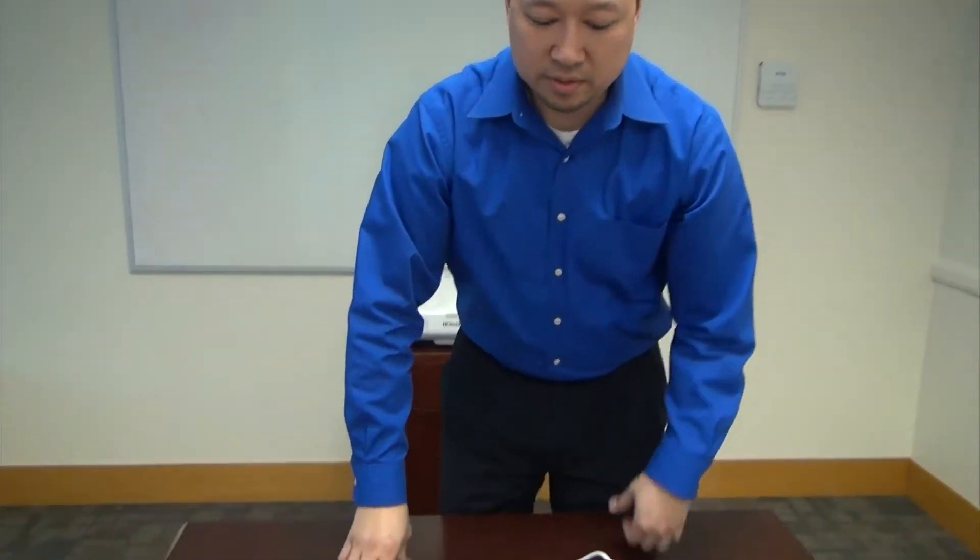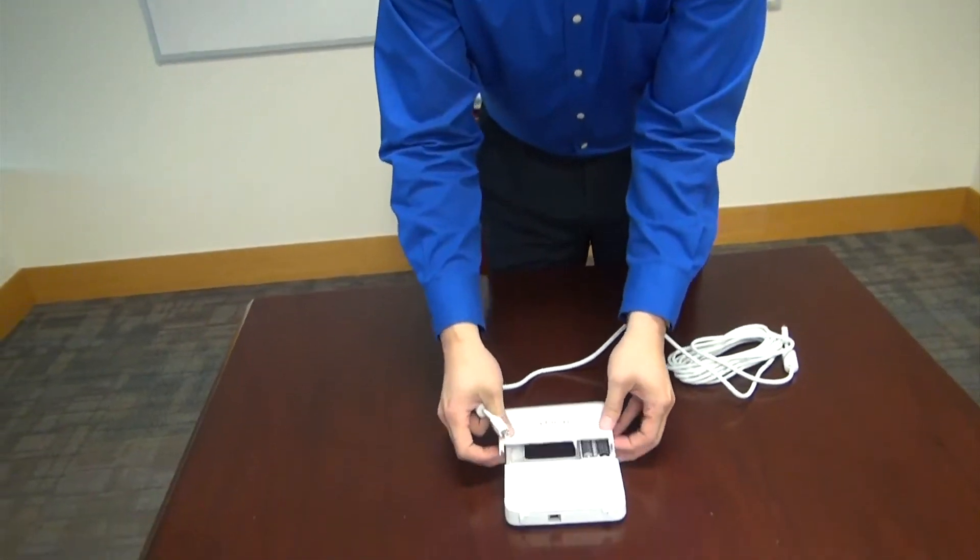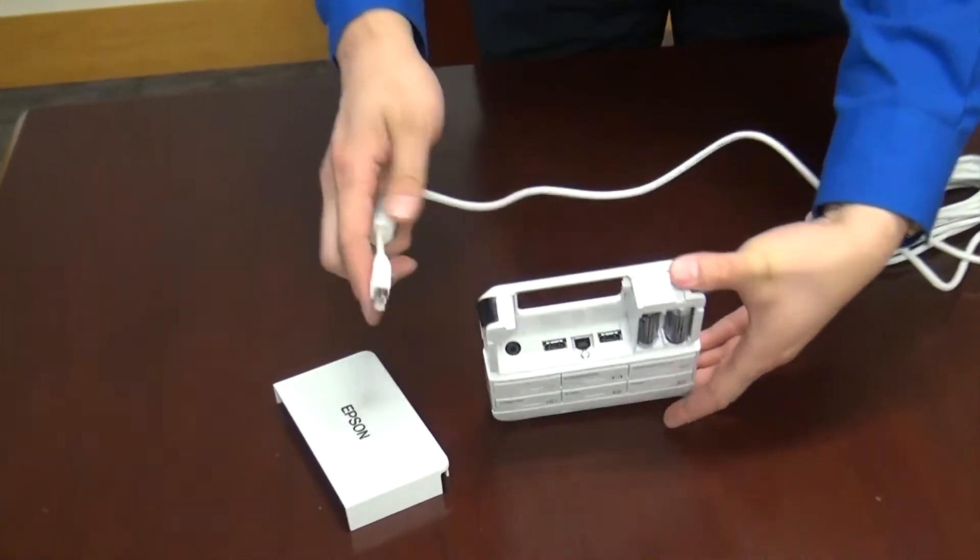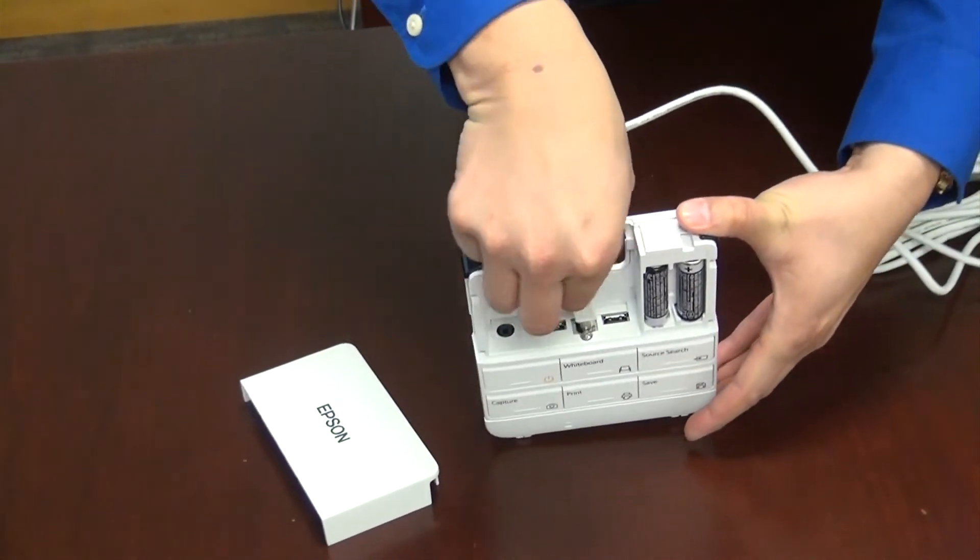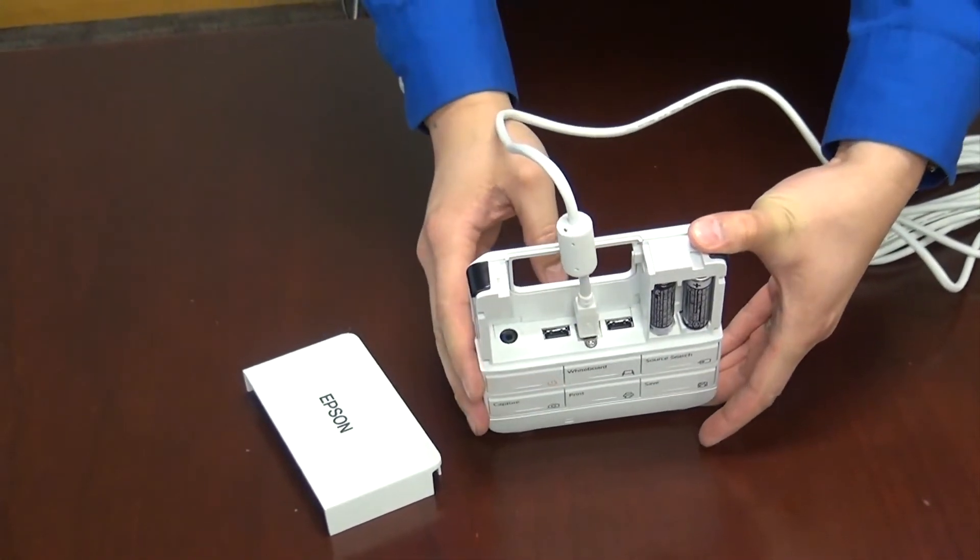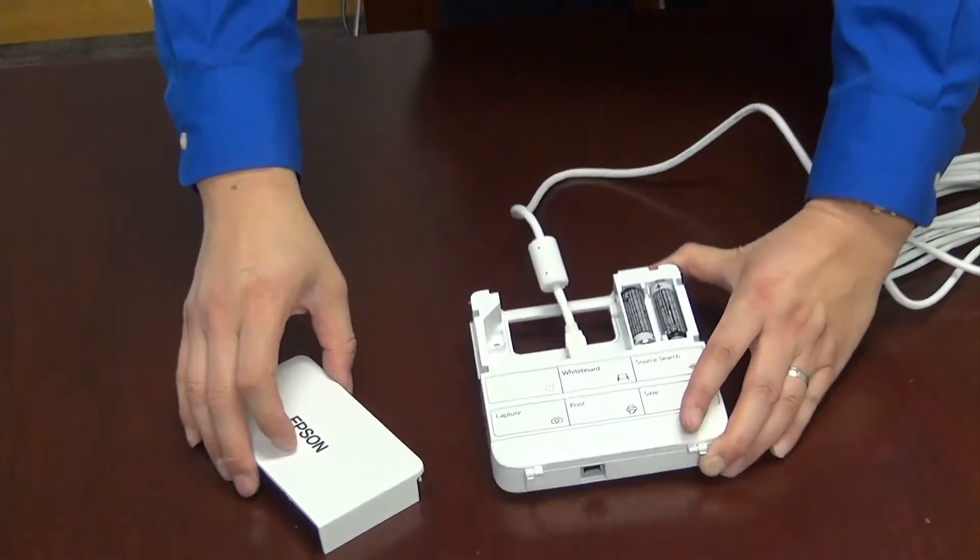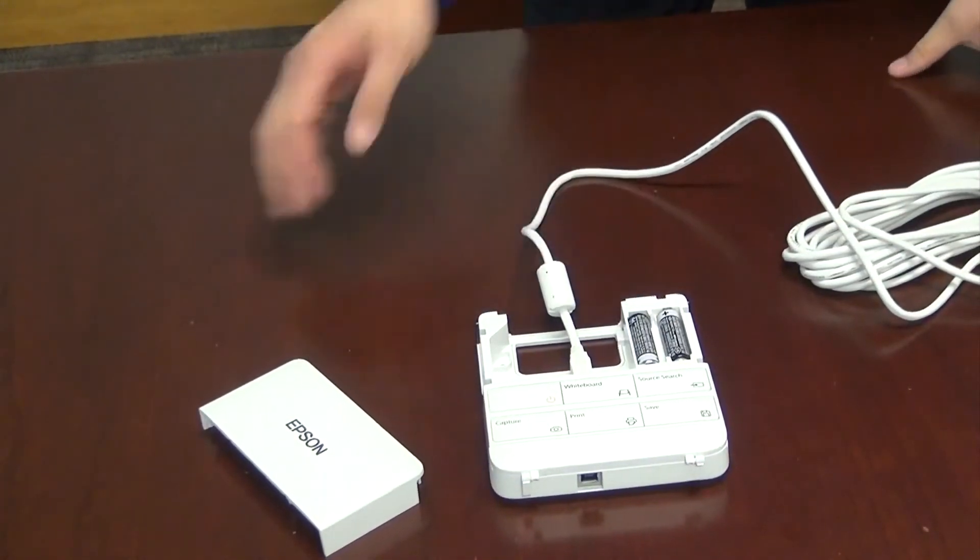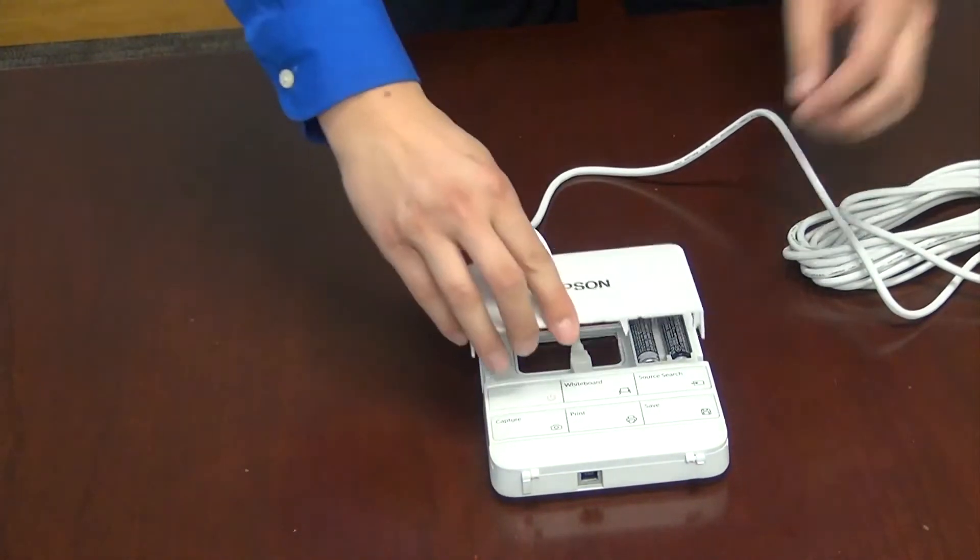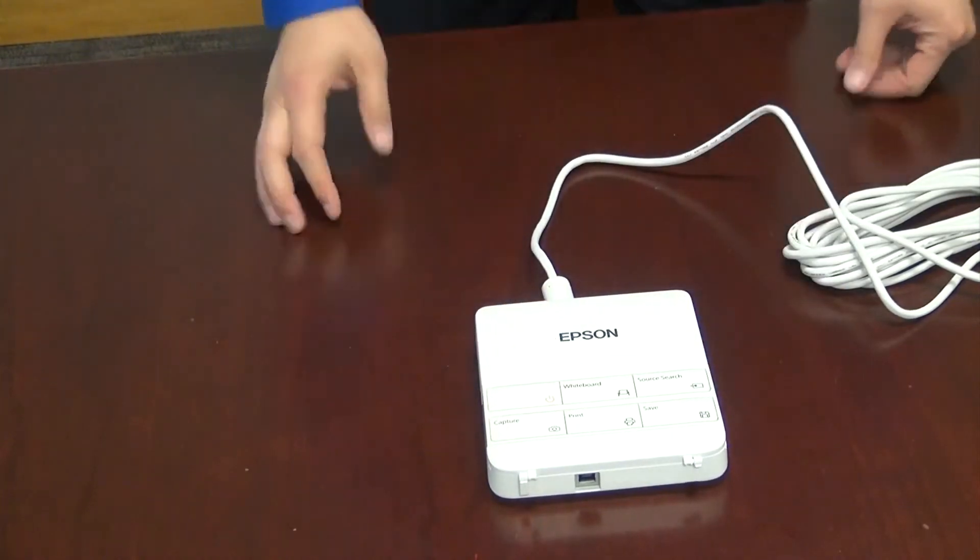Okay, now we're going to connect the other end of the USB cable to the control panel. Open up the control panel. Connect the USB cable into the USB-B port. Don't forget your batteries. Close it. You're good to go.